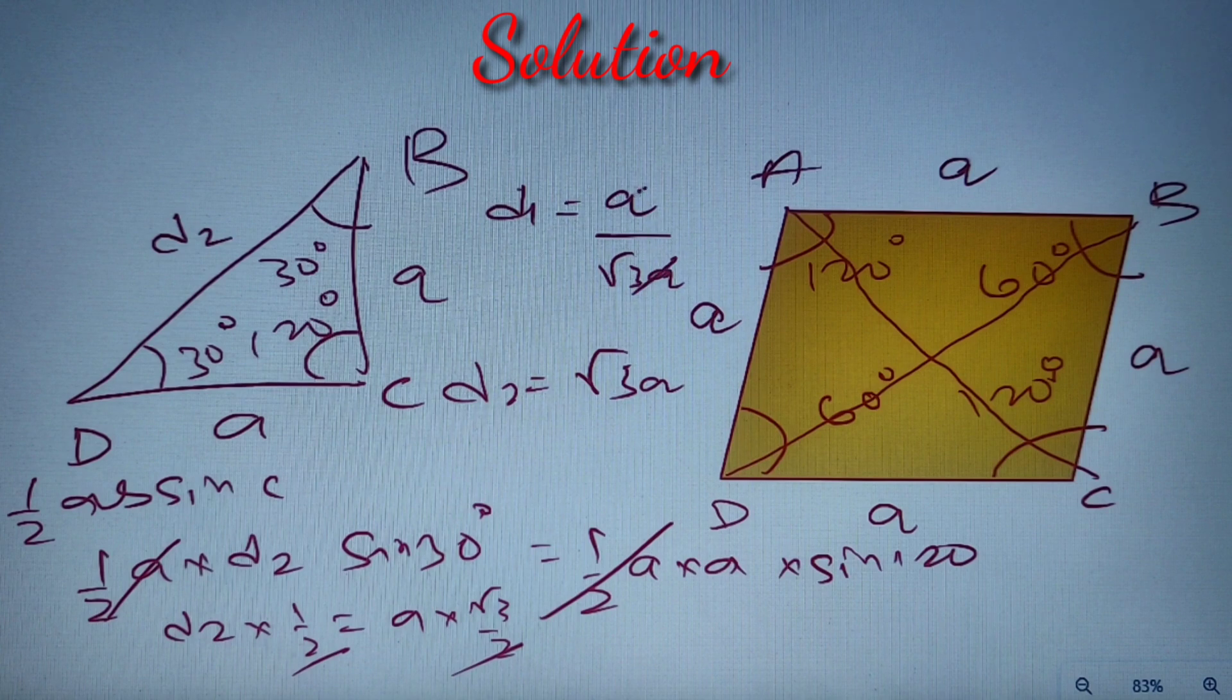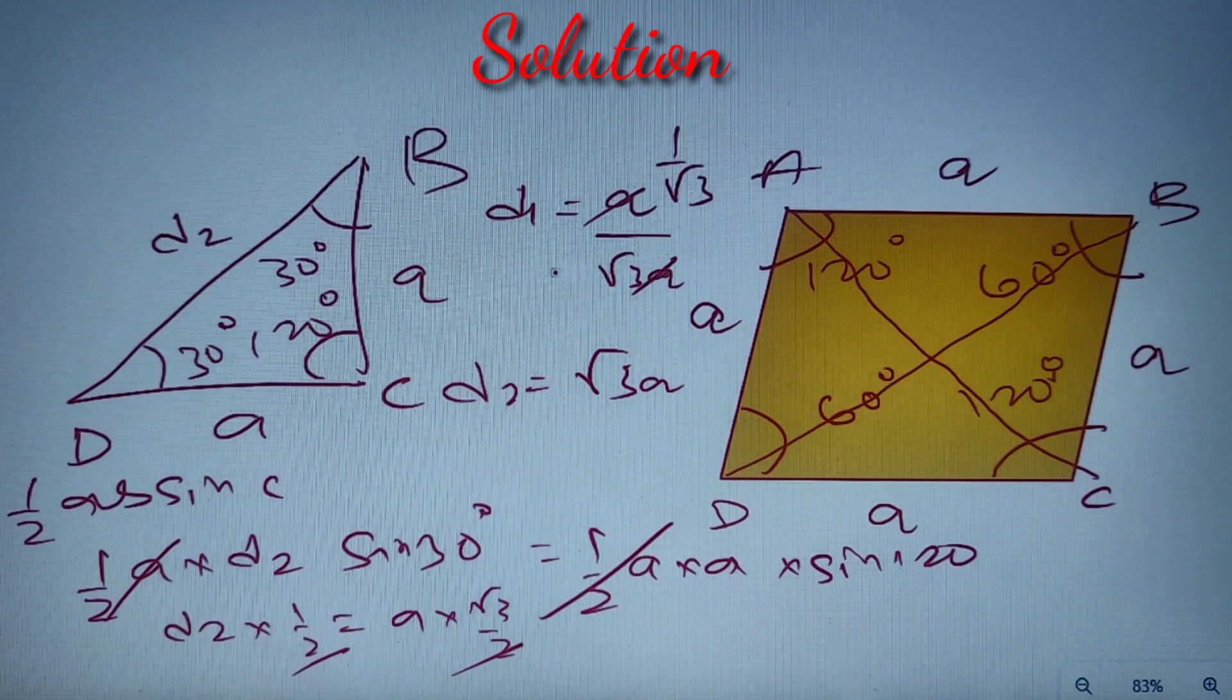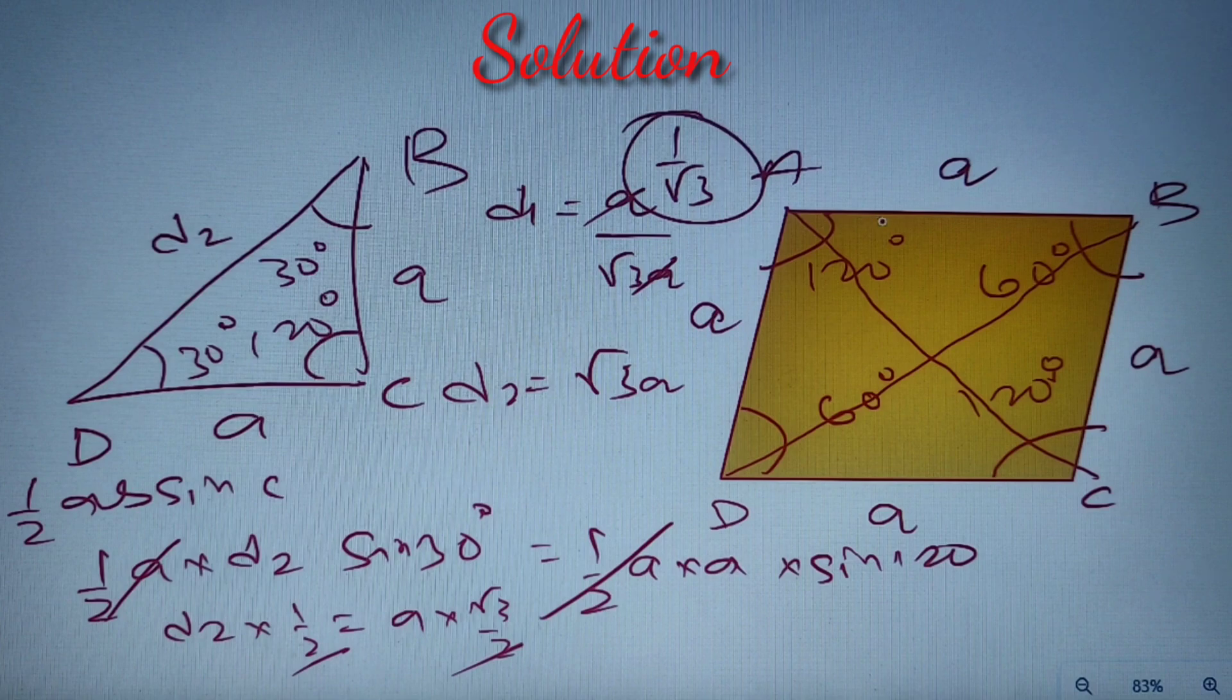That is equal to a by root 3 a, and upon cancellation we will get the ratio as 1 by root 3. According to our given options, it is option number D. So the value of the ratio of the shorter diagonal to the longer diagonal is equal to option number D, 1 by root 3.